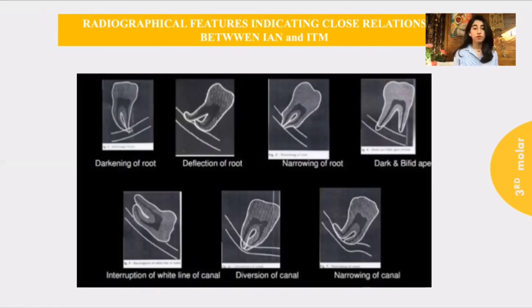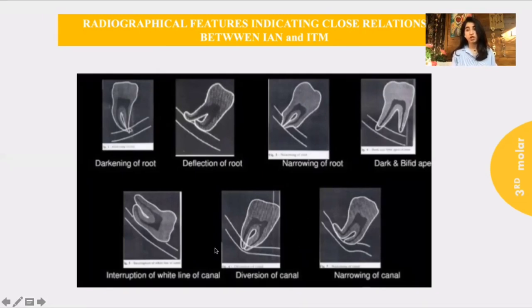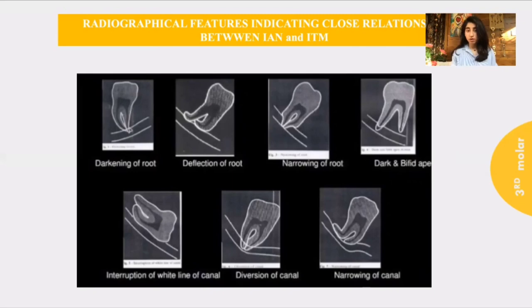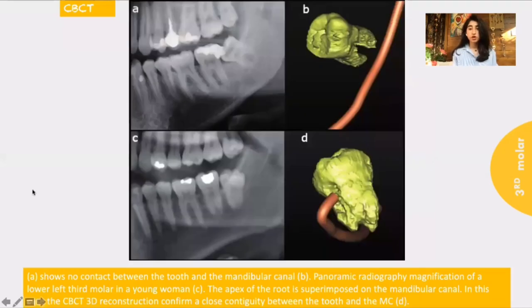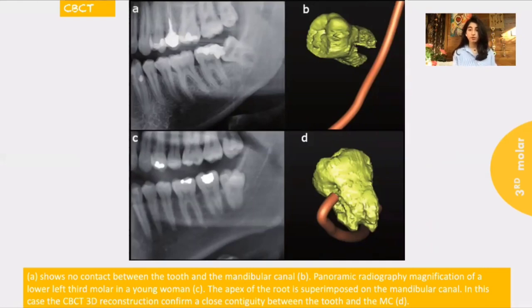If there is a darkening of roots, deflection of roots, dark bifid apex, narrowing of the canal, or diversion of the canal, these all indicate that there is a close relationship. We should keep in mind that the OPG is a two-dimensional radiograph, so sometimes it's not enough. We can use the 3D dimension, which is the CBCT, if we want to see the exact location of the impacted third molar.